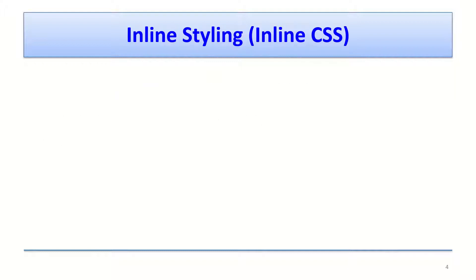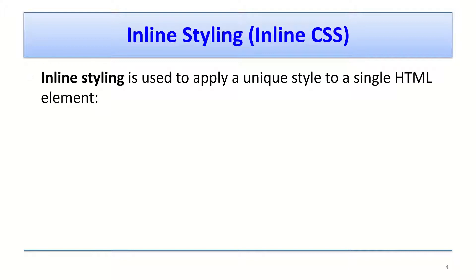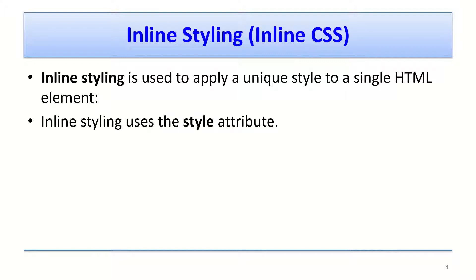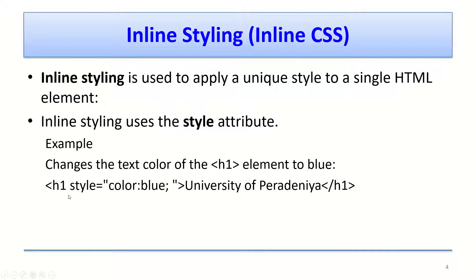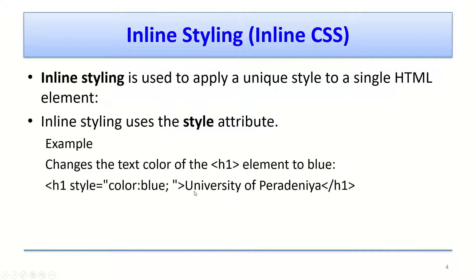The first method is inline styling. Inline CSS is used to apply a unique style to a single HTML element using the style attribute. For example, if you want to change the color of a level-one heading to blue, inside the h1 element you set the style attribute with 'color: blue', then add the heading content and close the tag.